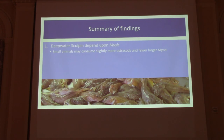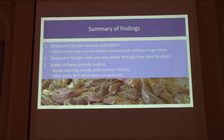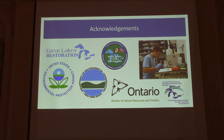So deepwater sculpin depend on mysis, but the small ones do use other stuff — they probably can't depend on the very large mysis when they're small. Diets are pretty stable through time and location: it's mysis everywhere, all the time, for everybody — except for the little ones, which also get some other stuff. Stable isotopes add nuance: it's not just any mysis, but maybe a certain brand of mysis. Thank you to the many collaborators who worked on this — I'm just presenting that work, not taking credit for the back-end effort.